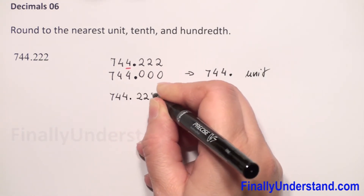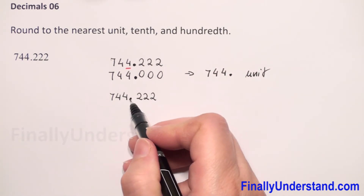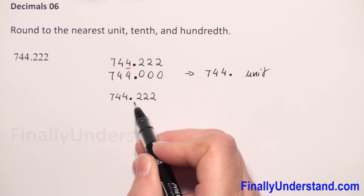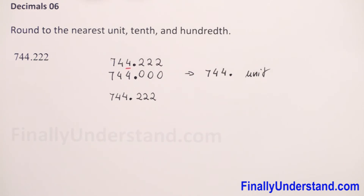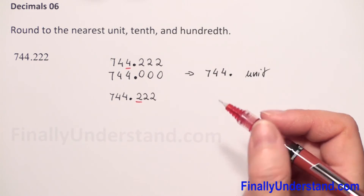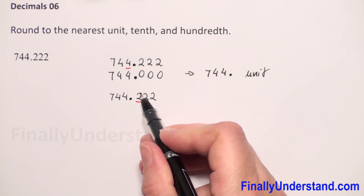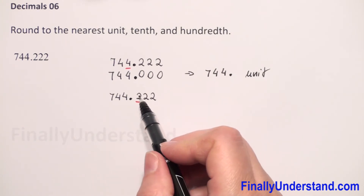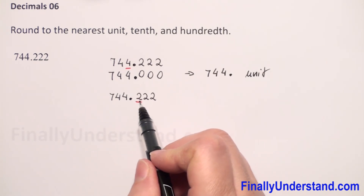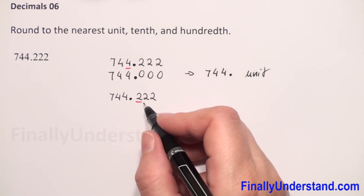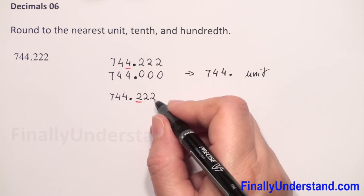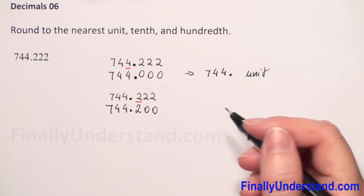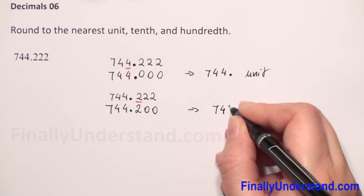Next, we need to rewrite our number again. Now we need to round to the 10th. The 10th is the first digit after the decimal point always — the decimal point is always between the unit and the 10th. So the first digit to the right from the decimal point is the 10th. We underline the digit to which we will round our number. The next digit after the underline is 2. When we have less than 5, we copy everything to the left of our underlined digit, keep the underlined digit, and every digit after it becomes 0. So 2 we change to 0 and the rest we copy. When we round to the nearest 10th we have 744.2.